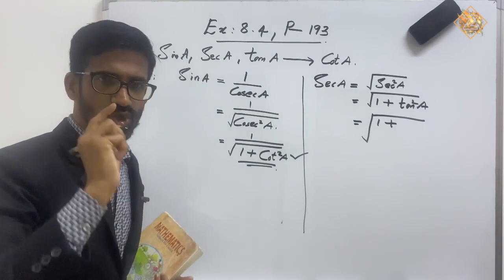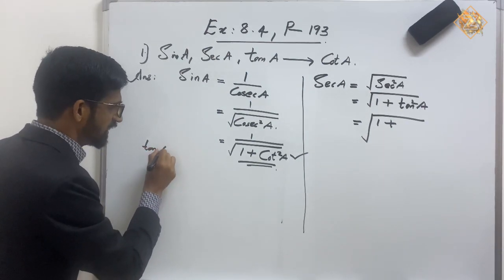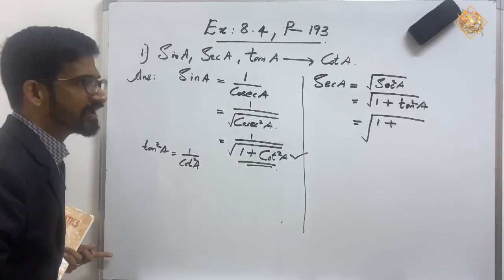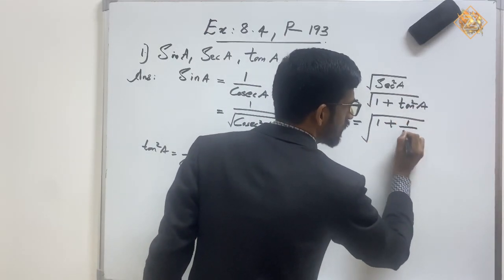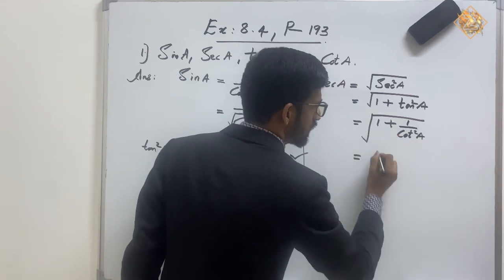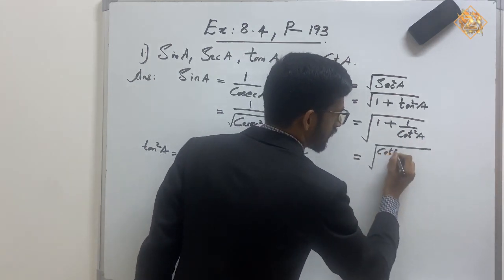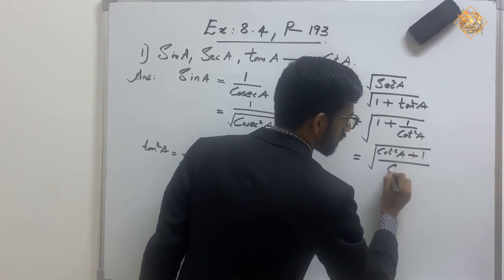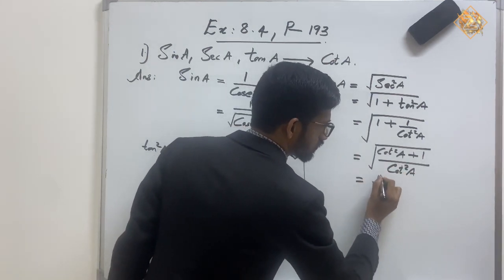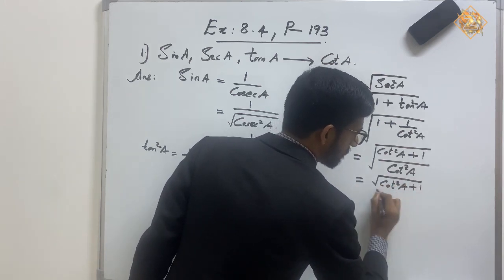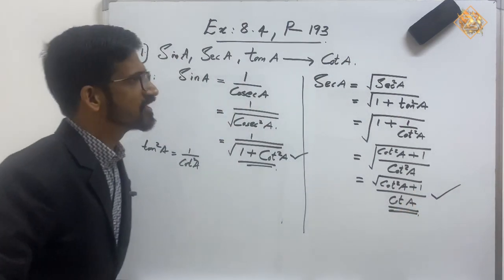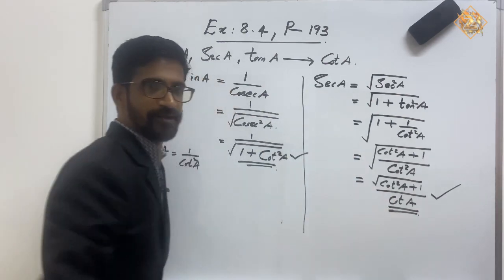Now, tan A is the inverse of cot A, so tan A = 1 by cot A, and therefore tan² A = 1 by cot² A. Substituting, sec A = root of (cot² A + 1) by cot² A, which simplifies to root of (cot² A + 1) by cot A. Hope that is clear — we've expressed sec A in terms of cot A.